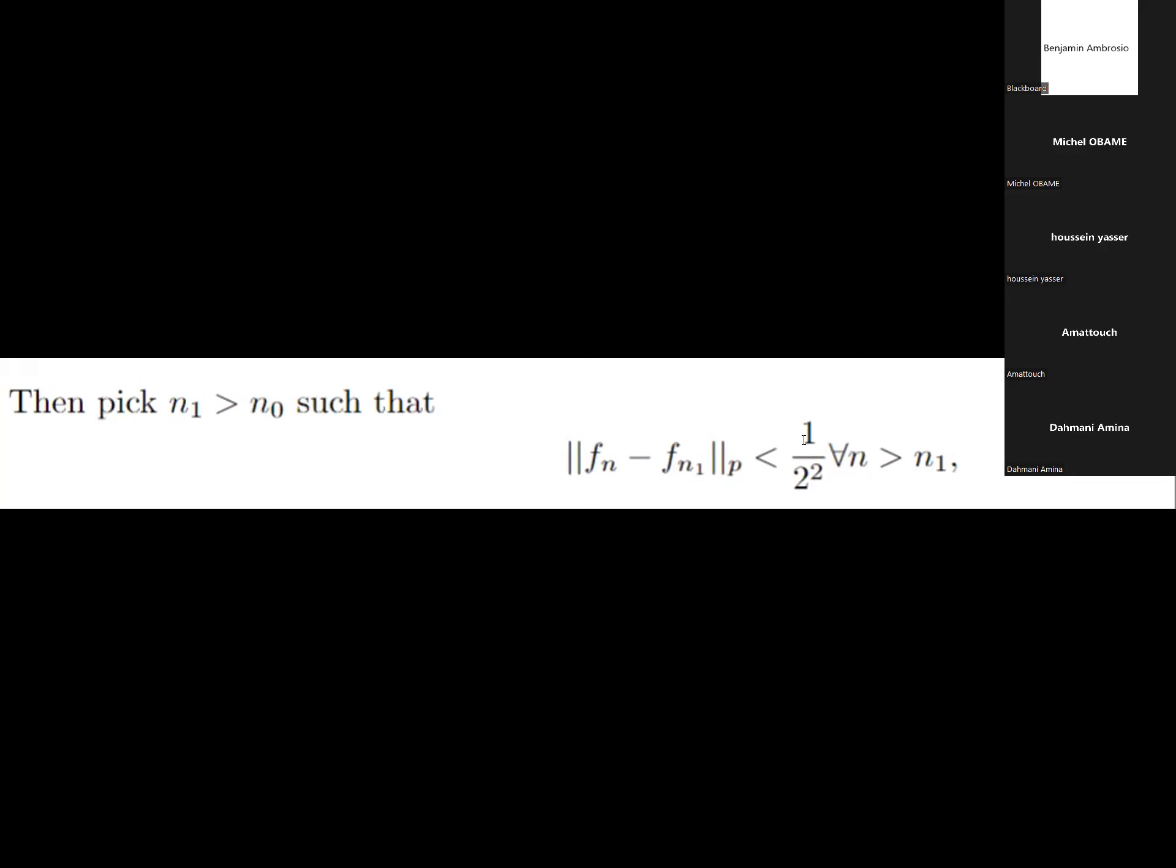Assume now that I have my n_0, n_1, n_2, up to n_{i-1}. I construct in the same way such that ||f_n - f_{n_i}||_p satisfies this inequality. But now, note that by construction, I have that this inequality holds.